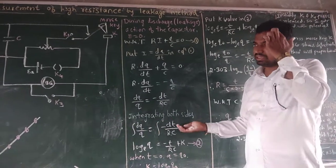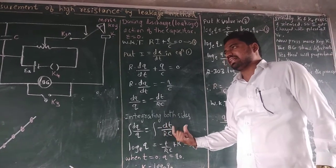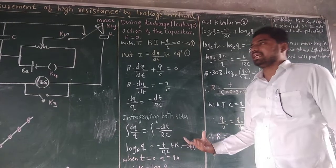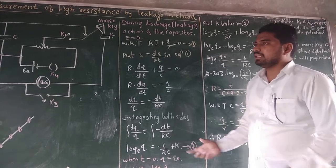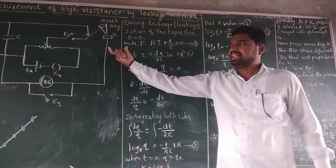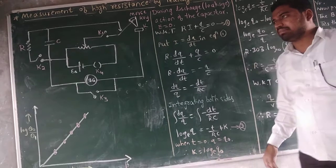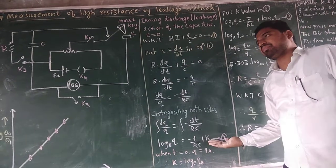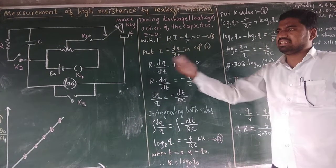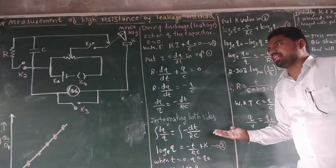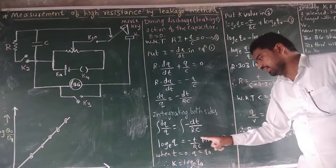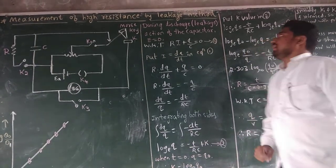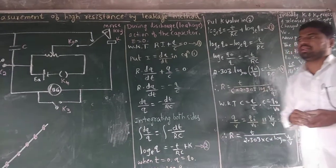After integration, we get log q equals minus t divided by RC plus integration constant K. This is equation number 2. Initially, at t equals 0, there is no flow of charges, so q equals q-naught, where q-naught is the initial charge. Substituting, K equals log q-naught to the base e.